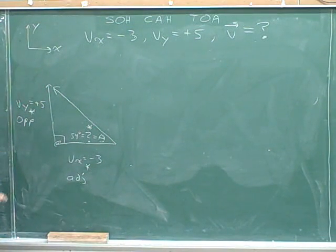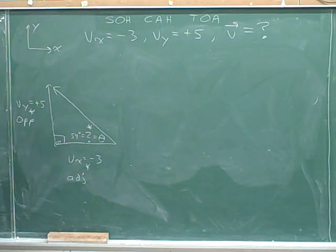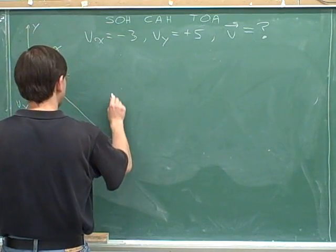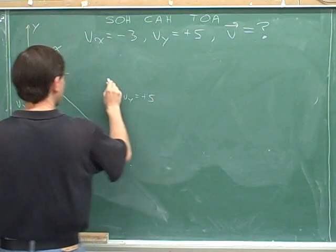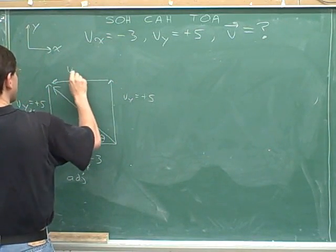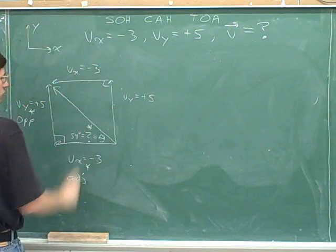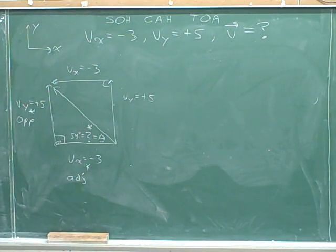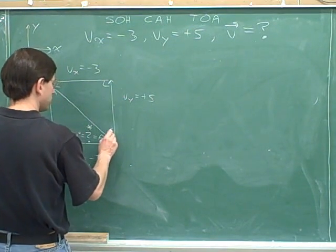Now, when I originally drew this triangle, I first drew the x-component, and then I drew the y-component. What would have happened if I had drawn the y-component first? Well, if I had drawn the y-component first, it would have looked like this. And then I would draw the x-component. Then I would get a different right triangle. And then it would have been natural to focus on this angle.